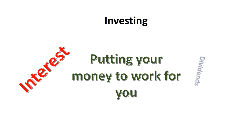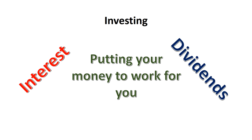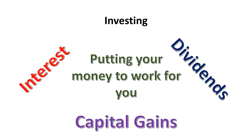You might also earn dividends — that is, with a company that has stock, you own the stock and they pay you a portion of their profits. The third way is something called a capital gain: this is a buy low, sell high — you bought something at a relatively low price and now you sell it at a relatively high price. All three ways are ways to make money through investing.